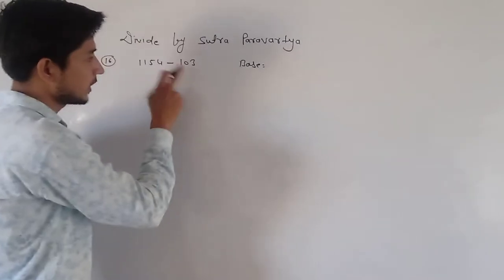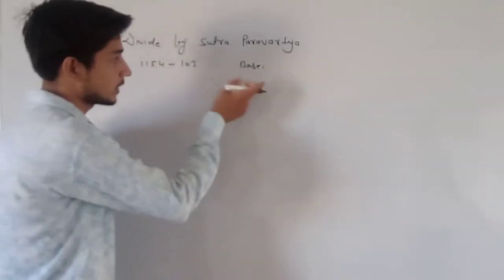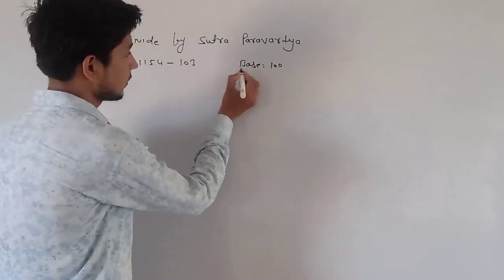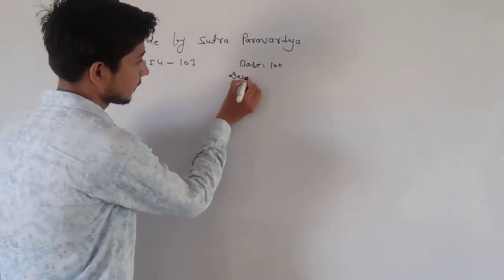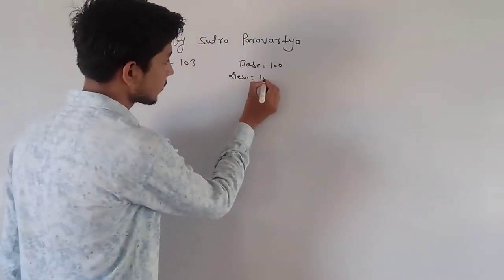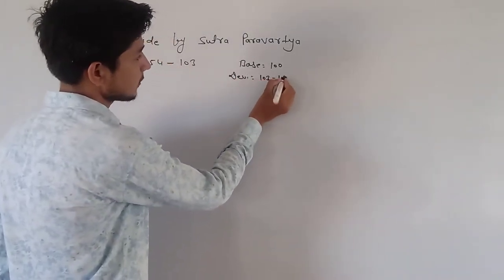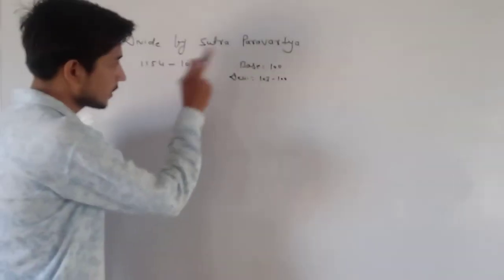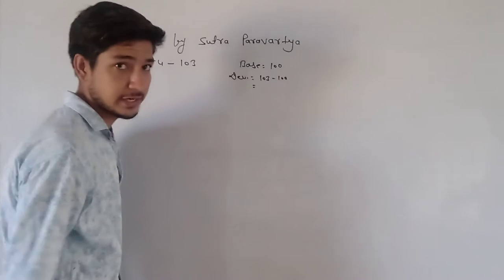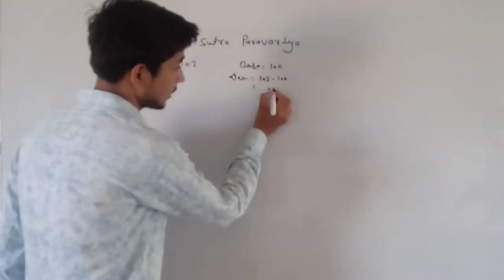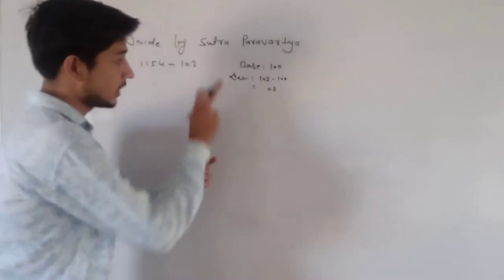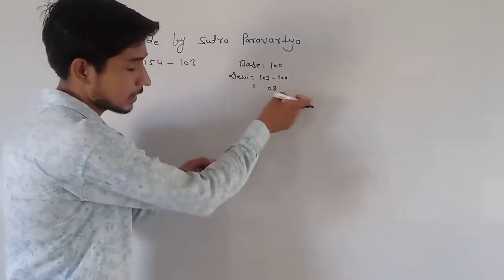Our divisor is 103, so we will decide this base, 100. Then we will find the deviation. The deviation is always divider minus base. 103 minus 100, the answer is 03. Because base is 100, so the deviation of 2 digits are compulsory.